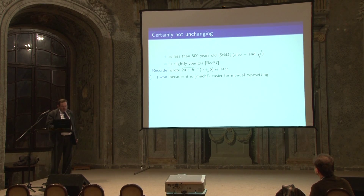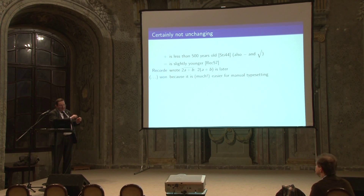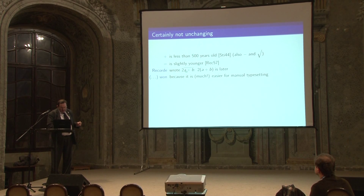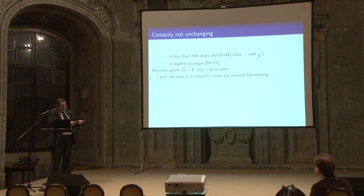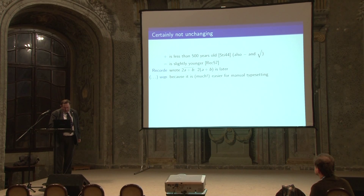Why did brackets win? Because brackets are much easier to typeset: you pick up an open bracket and put it in the right place, pick up a closed bracket. If you want to typeset the overline notation, you have to take a straight line, cut it to the right length in lead. Much harder. This is an example of the technology driving the notation.